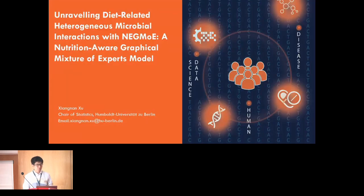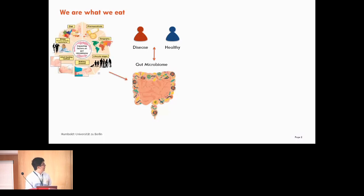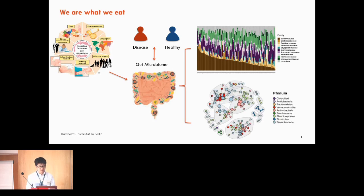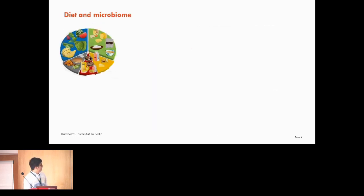I think all of us know that the microbiome is very important to us and it relates to disease and health. One of the key questions is that we have a lot of factors that affect our gut microbiome, for example geography, as well as drugs we take. This affects not only the relative abundance of our microbiome but also the correlations between gut microbiome members. In our talk we will especially focus on diet — we are what we eat — and our diet is closely related to our microbiome.